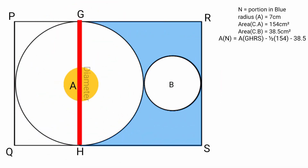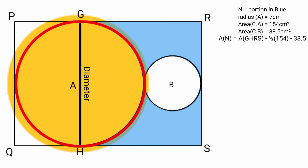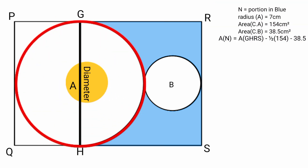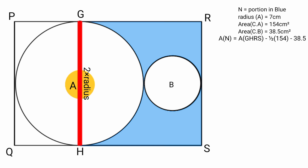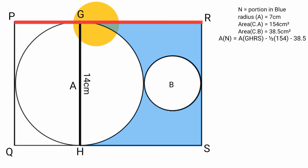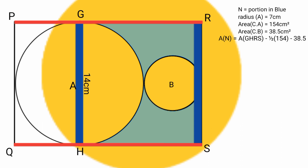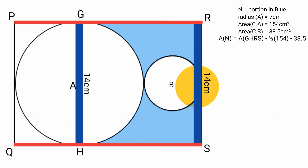Line GH is a diameter of circle A and the radius is 7 centimeters, so the diameter — and hence line GH — is 2 × 7 equals 14 centimeters. Since lines PR and QS are parallel and lines GH and RS are at right angles to them, GH and RS are equal because the perpendicular distance between two parallel lines is equal at all points. So RS is also 14 centimeters.